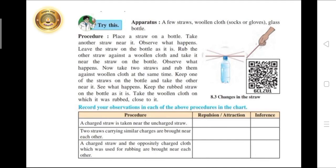Keep the rubbed straw on the bottle as it is. Take the woolen cloth on which it was rubbed close to it. Record your observations in each of the above procedures in the chart.